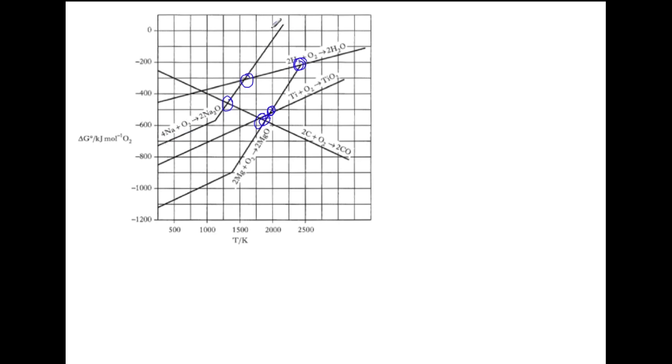To be able to extract magnesium using hydrogen, we need to go even higher to around 2450, to this crossing-over point here. If we wish to extract sodium using titanium, we're able to do this at all temperatures, as the sodium line is always above the titanium line.